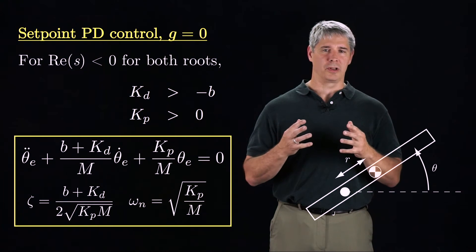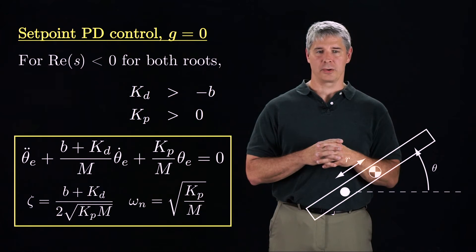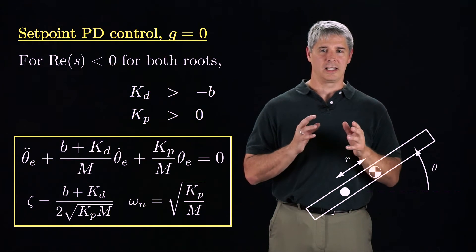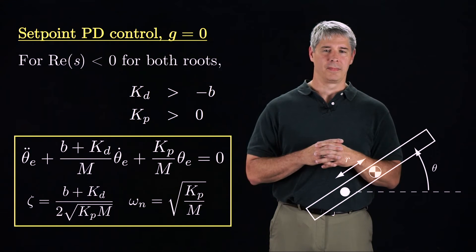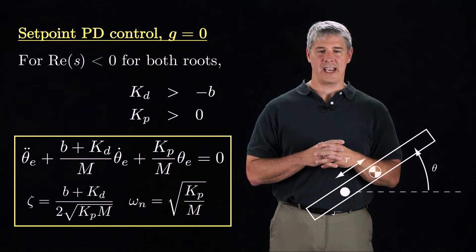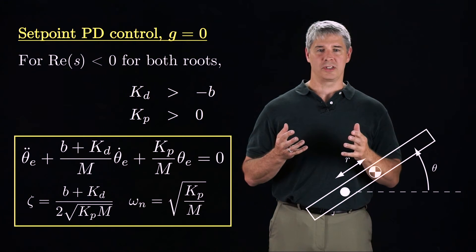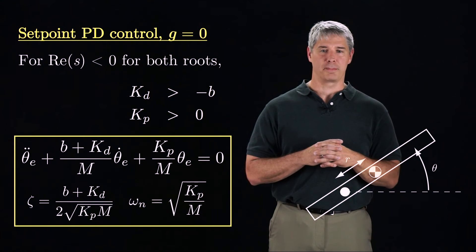We should also use what we learned about the transient response of second-order systems to place the roots to give a fast settling time and no overshoot. In particular, we could choose kd and kp to achieve critical damping, and otherwise choose the gains large enough to get a fast response.